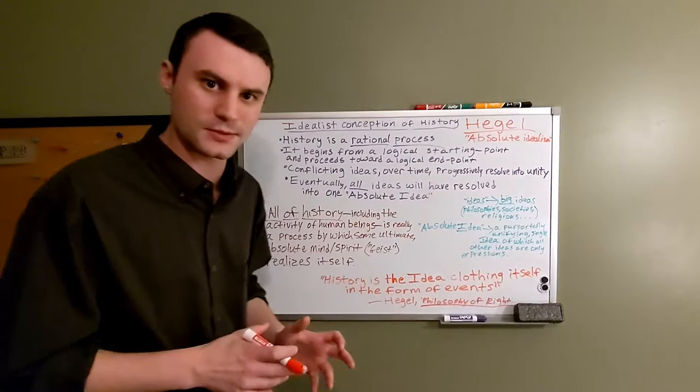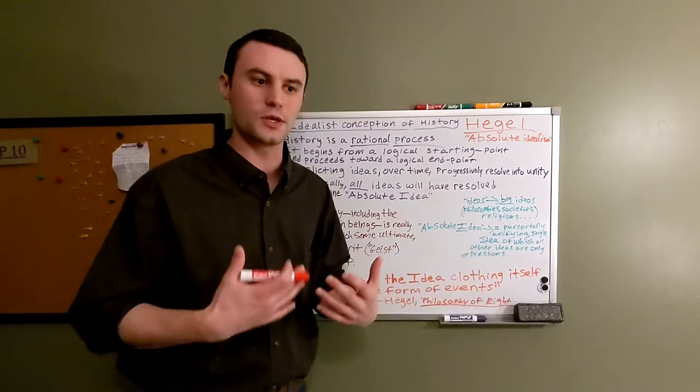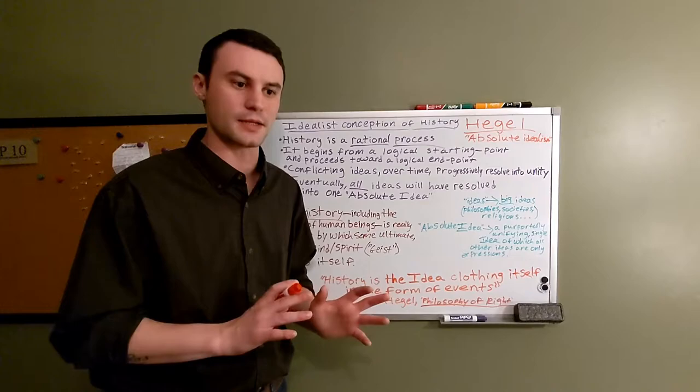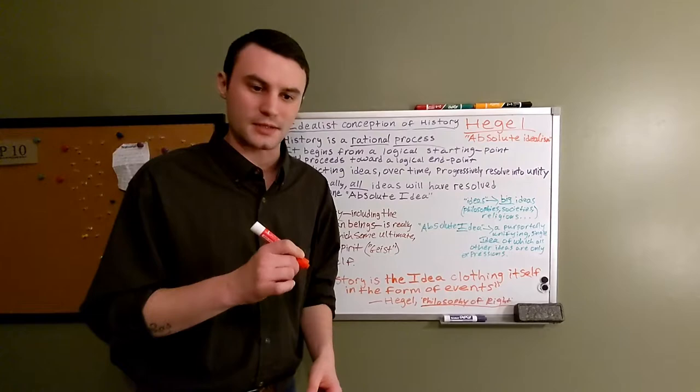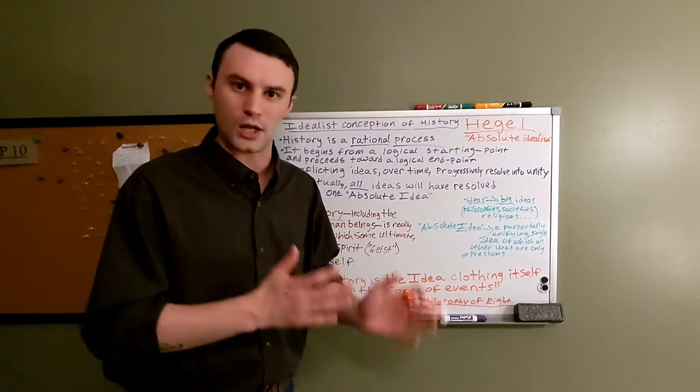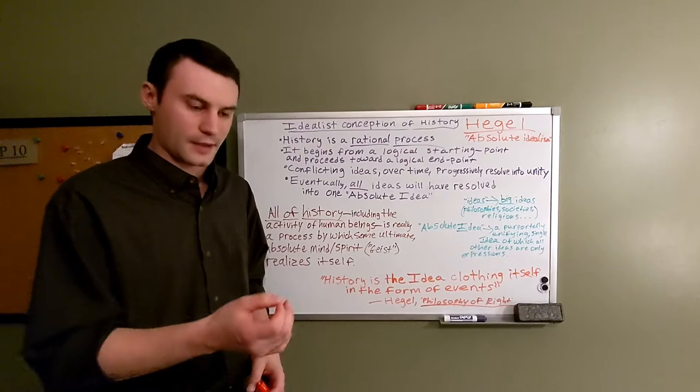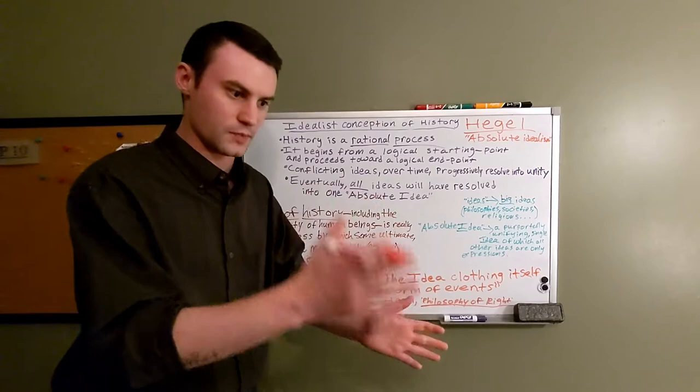Hegel's understanding is that history itself is a process. This is a teleological conception of history. Teleological means that it has some kind of purpose, or if that language is too strong, it has some sort of end, some sort of aim in mind. It's a rational process, a logical process. It proceeds according to some kind of logic. It begins at a logical starting point, some point of singularity, and proceeds to a logical endpoint, returning to that singularity.